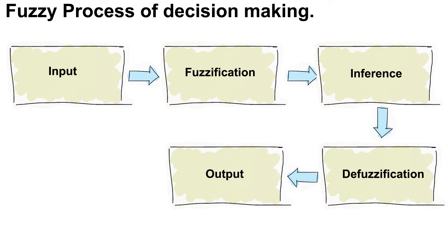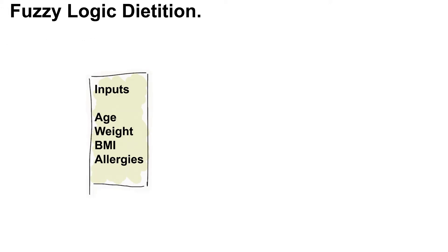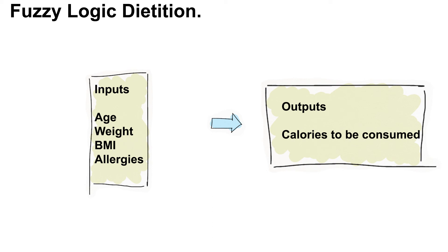These rules then are used to find values that can then be defuzzified using Mamdani or center of gravity method to produce crisp output values.